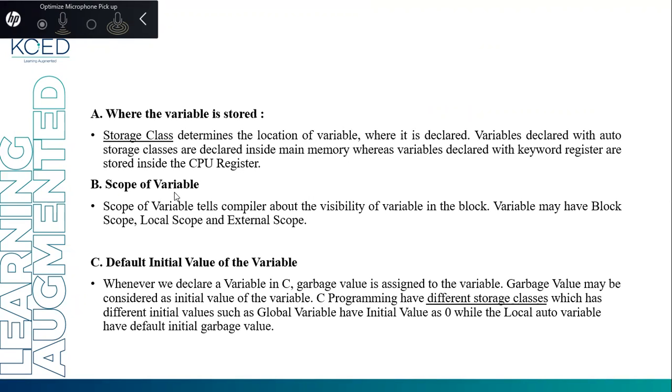Next is scope of the variable. Scope of the variable tells the compiler about the visibility of the variable in the block. A variable may have a block scope, local scope, or external scope.